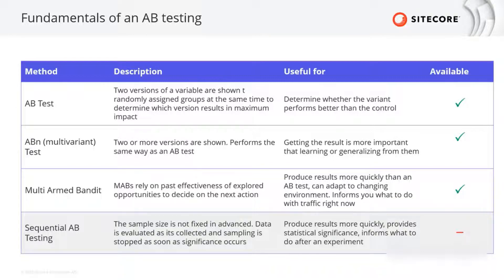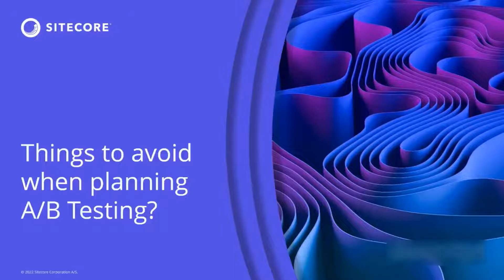Another point to remark on is stopping conditions. You can at any moment stop an experiment, even if the test hasn't reached statistical significance. You can set a stopping criteria so your test resolves an end result even without reaching statistical significance.